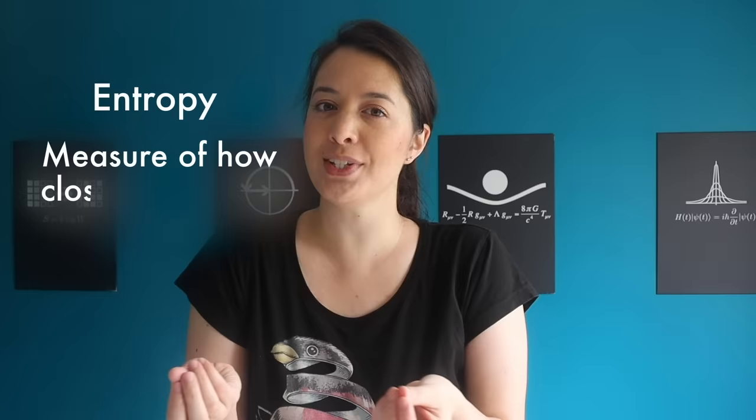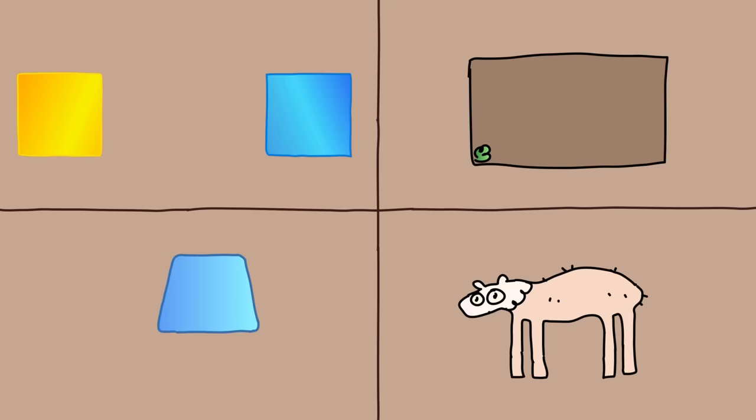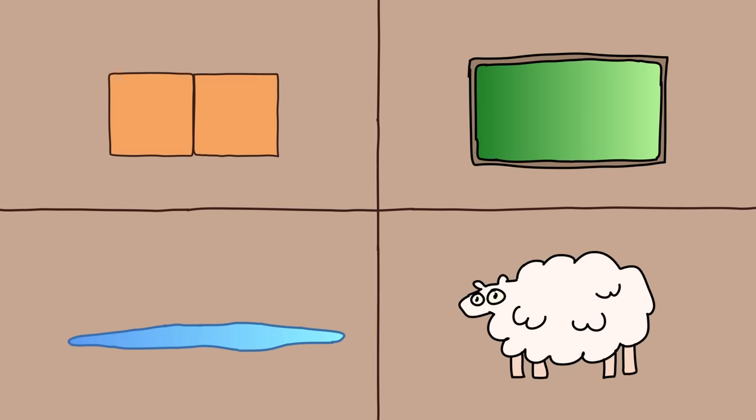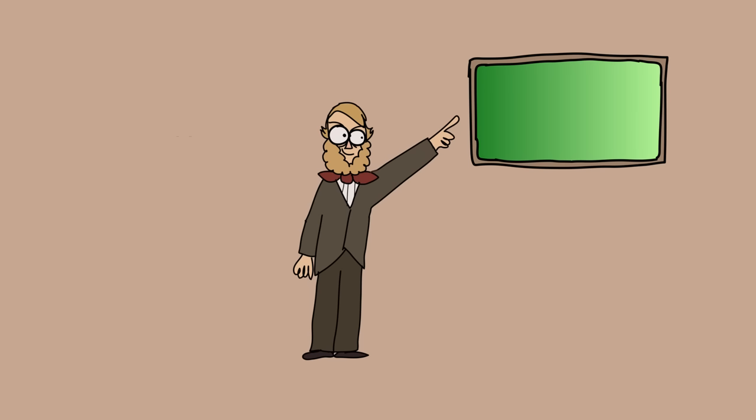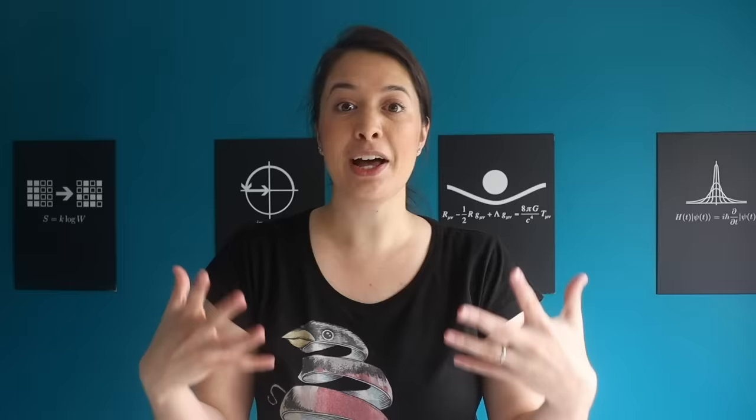The closer a system is to equilibrium the higher its entropy; the further away, the lower. Equilibrium is the state in which the system is perfectly balanced and no longer changes — and this most often looks like the most disordered state. Clausius declared it a physical law that the entropy of a closed system always increases or stays the same; it never decreases. We now call this the second law of thermodynamics. For the first time in history we had a law of physics that distinguishes between the forwards and backwards directions of time.